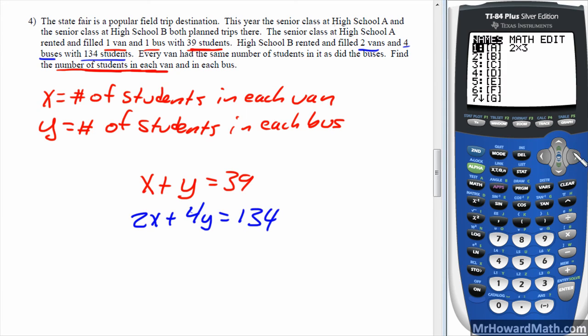So let's go into matrix, put that in, and first row would be 1, 1, 39. Second row would be 2, 4, 134. All right, so get out.